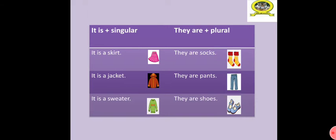Now look at this table. It's plus the singular. They are plus the plural. It is comes before the singular objects. For example, it's a skirt, it's a jacket, it's a sweater. They are comes before the plural objects like they are socks, they are pants, they are shoes.